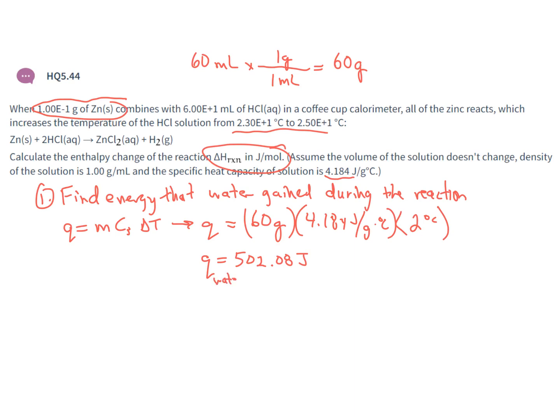So Q for the water would be 502 joules. That means the Q for the reaction needs to be negative 502.08 joules. That means when the zinc reacted with the HCl during this reaction, it released 502 joules of energy.